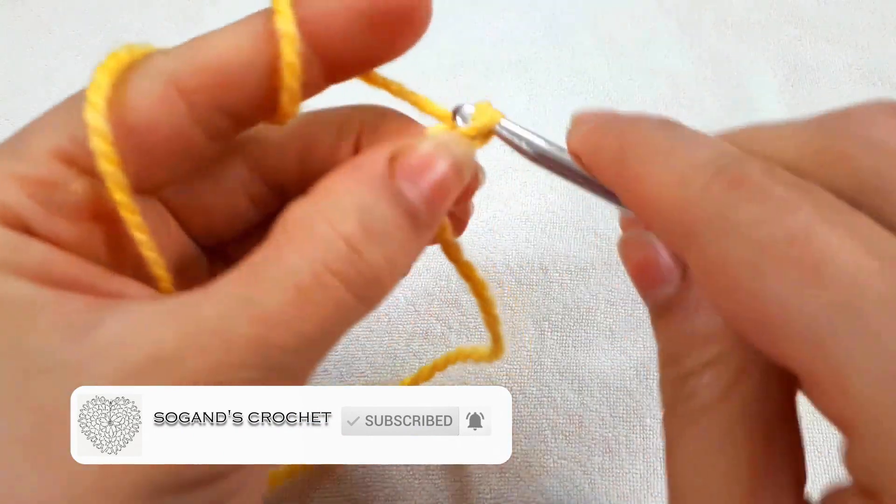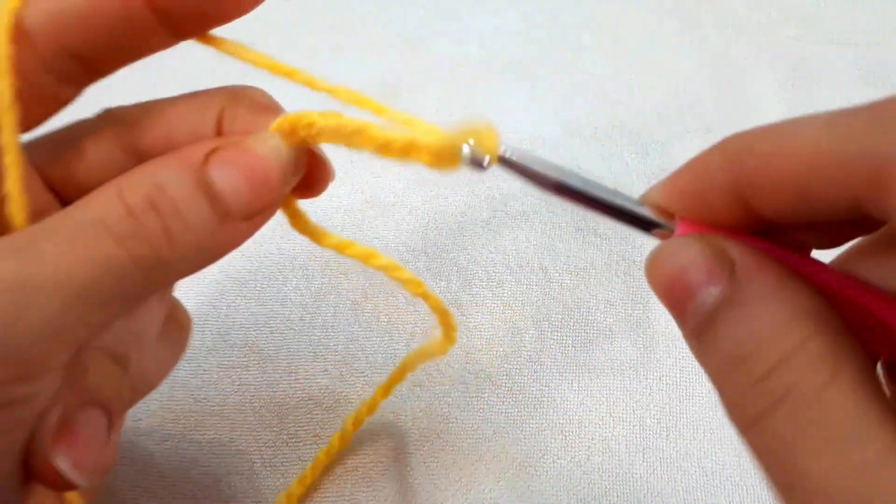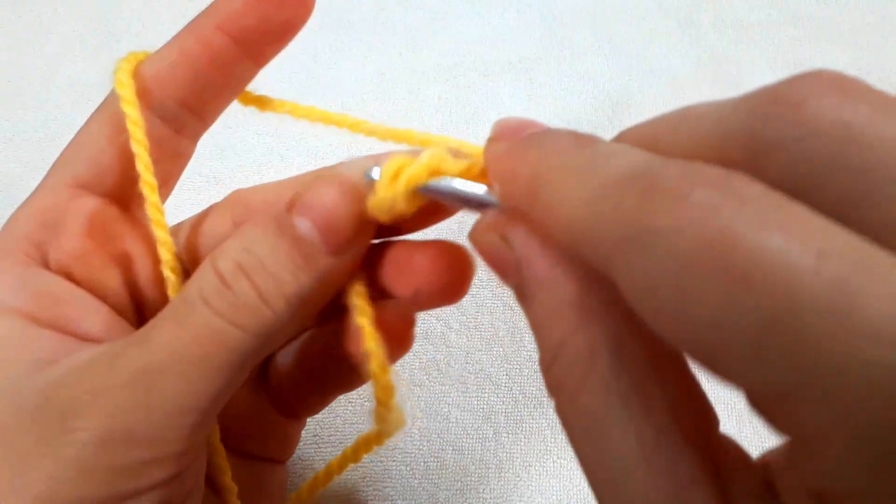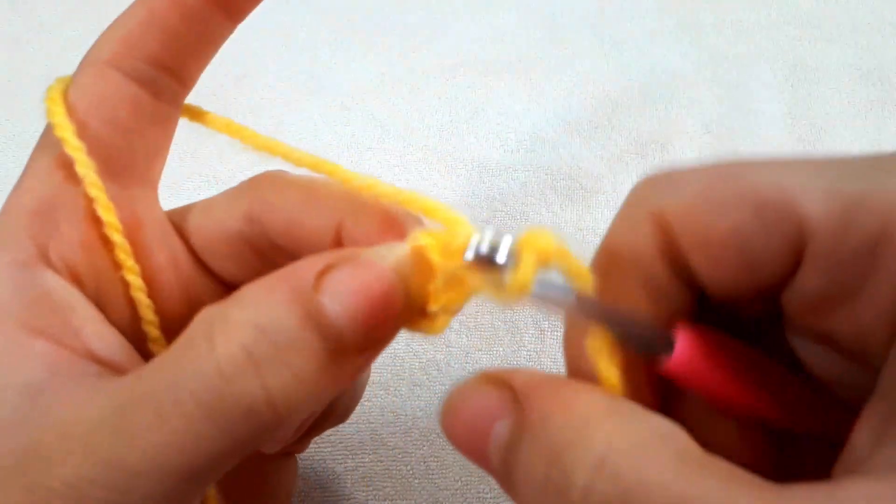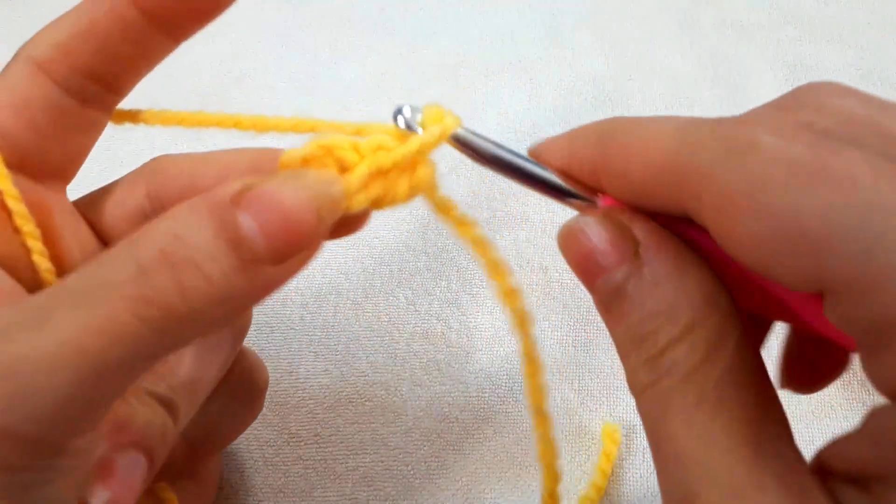And chain four: one, two, three, four. Insert your hook into the first chain and make a slip stitch. Crochet your pattern.